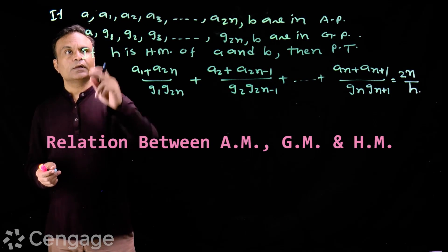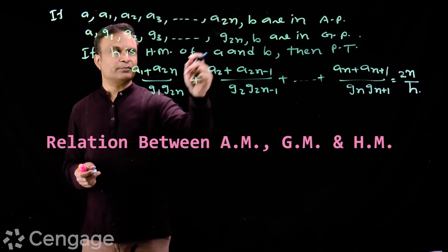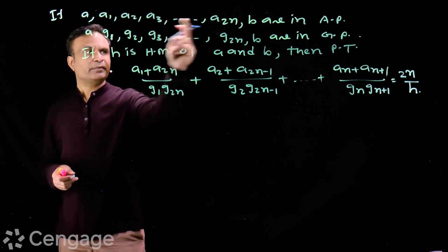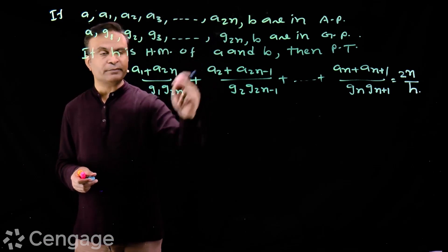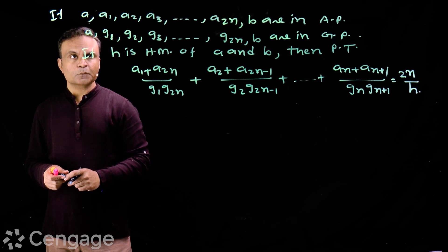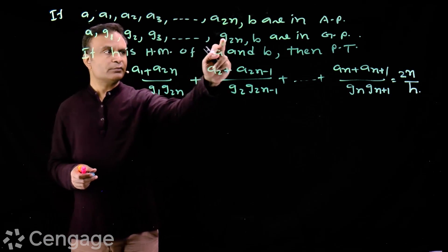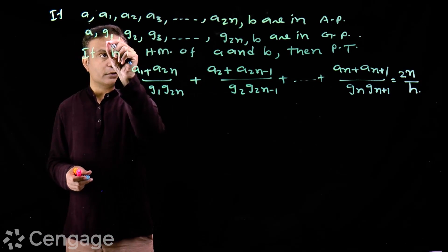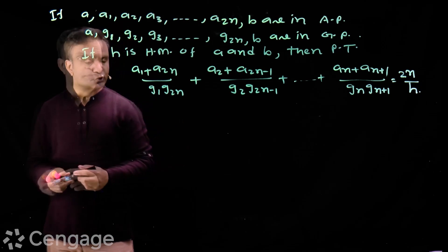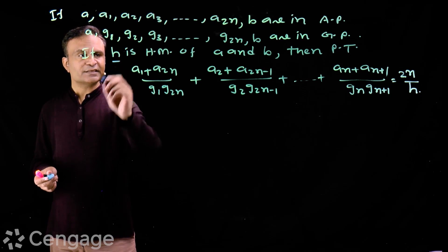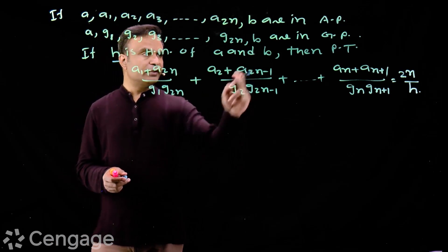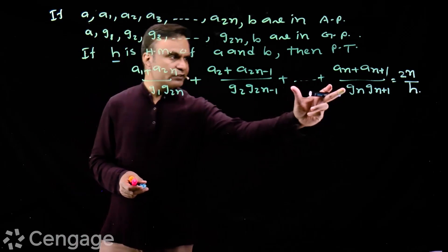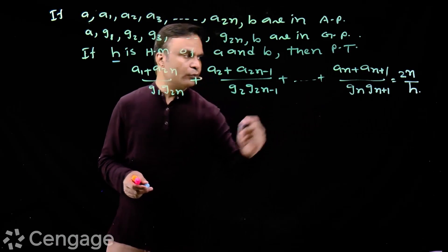We have this question: we have 2n plus 2 numbers in arithmetic progression. Between a and b we have 2n arithmetic means. These 2n plus 2 numbers are also in geometric progression, so between a and b we have 2n geometric means. If h is the harmonic mean of a and b, then prove that the value of this expression is equal to 2n upon h.